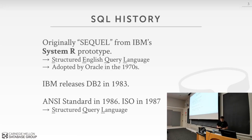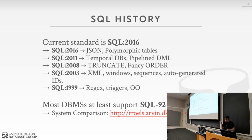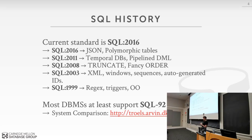SQL is not a dead language — it's like C++ in that they keep releasing new specifications every so often, adding new features. The latest standard is SQL 2016, which added JSON and polymorphic tables. SQL 1999 added regex and triggers. Typically, a standards body whose members are from major database companies push to get their proprietary features into the standard.